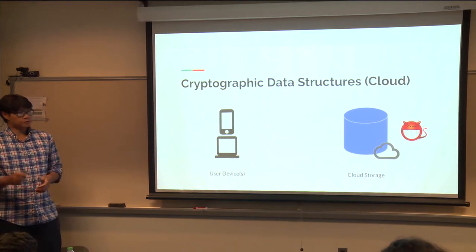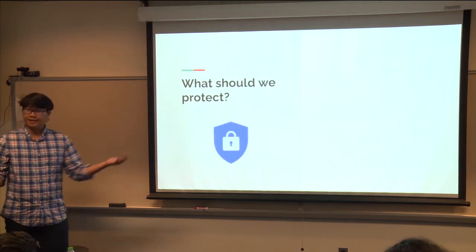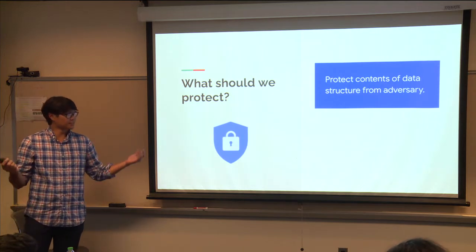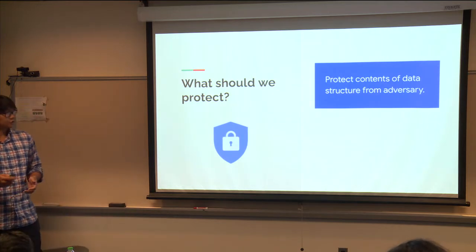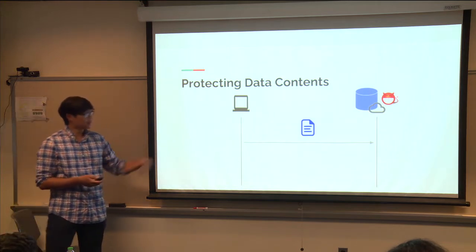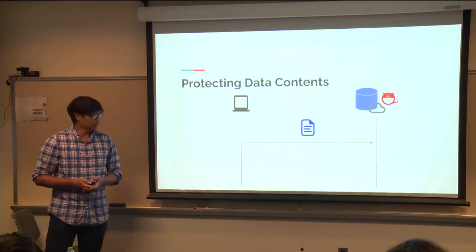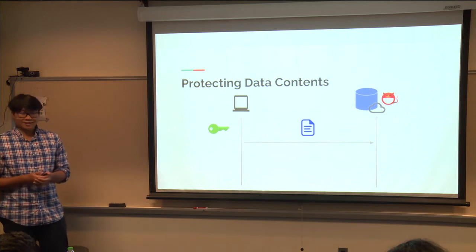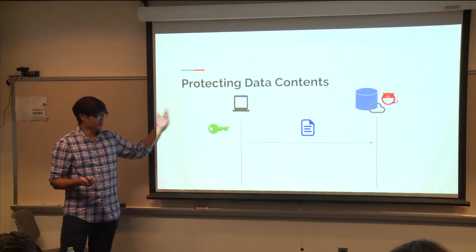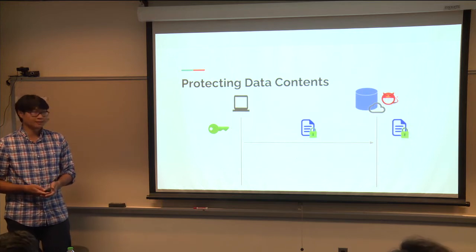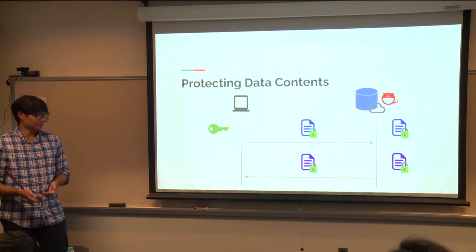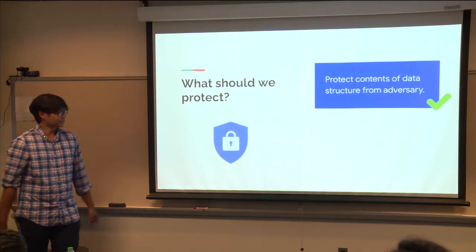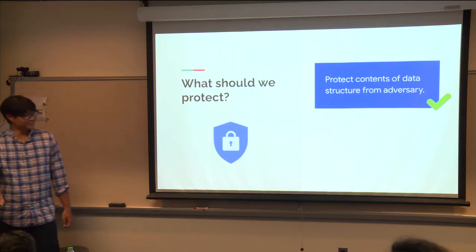Given this two-party model, what should we protect? The most natural thing is the contents of the data structure — keeping data private. If I upload documents to cloud storage, I want the adversary not to see them. This is actually easy to solve: keep a symmetric key locally, encrypt everything before uploading, and whenever you want to download a document, simply download the ciphertext and decrypt it.